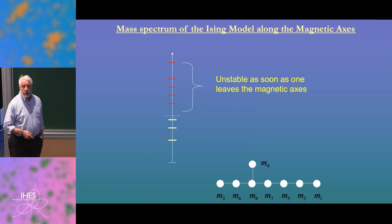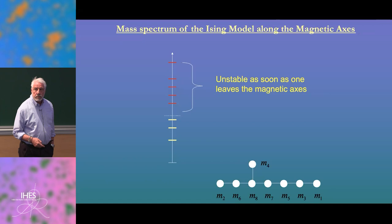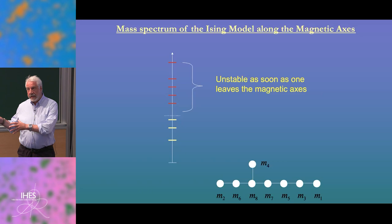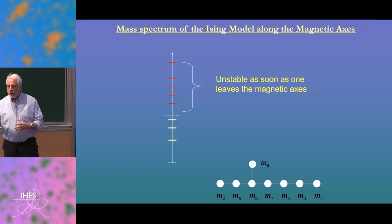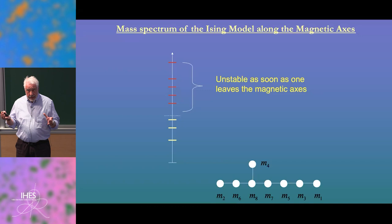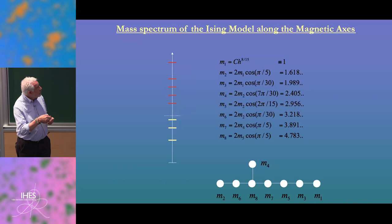Someone asks: are these masses connected with the gaps between excitations? Yes, exactly. If you look at the Ising model nearby the critical point, the correlation length is infinite. However, when you perturb by a magnetic field, you create a gap, which is precisely the measure of the magnetic field associated to the first masses — though of course it is non-analytic.